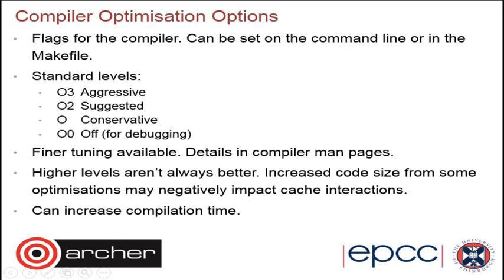What you may have seen in your results if you explored different compilers is that the runtime with the Cray and Intel compilers, without any particular optimization flags, is a lot better than with GNU. This is mainly because GNU by default has much less aggressive optimization. You can set optimization levels like O0, O2, O3 on the command line. Some optimizations can affect the exact reproducibility of results, and very aggressive optimizations can in some cases generate unwanted results by changing the order of operations.